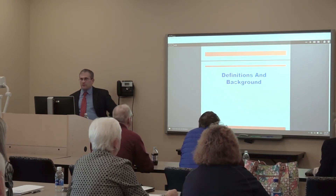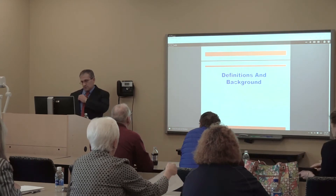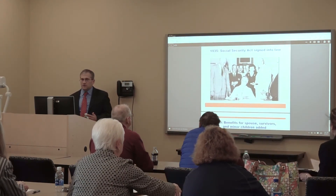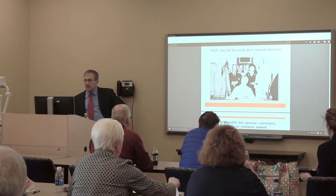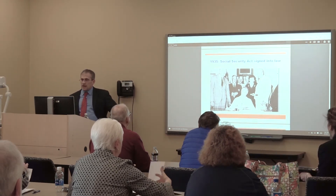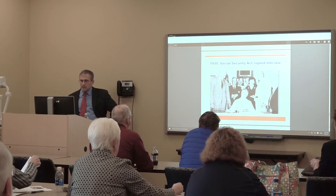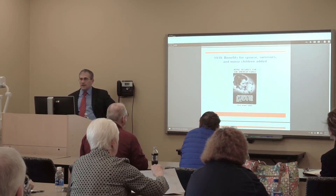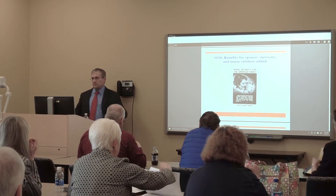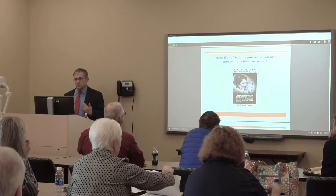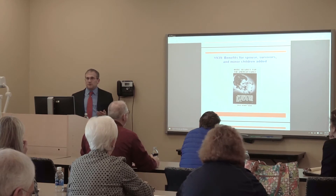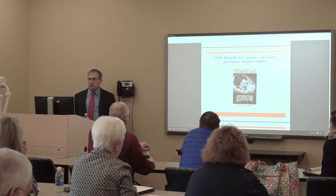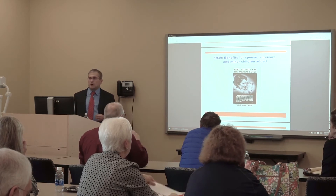First we're going to cover some background on Social Security and where it started. In 1935, the Social Security Act was signed into law by FDR. Then in 1939, they added to the program — benefits for spouses, survivors, and minor children. Originally it was only set up for retirees, so it only took four years before they started to tweak the program.